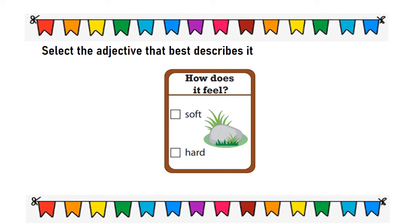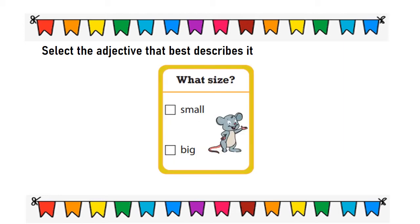Soft or hard? It is a hard stone. Here the adjective is hard. What size? The mouse is small or big? It is a small mouse. Here the adjective is small.